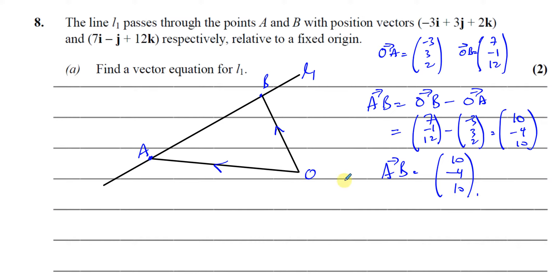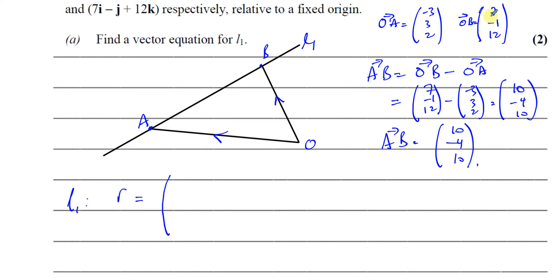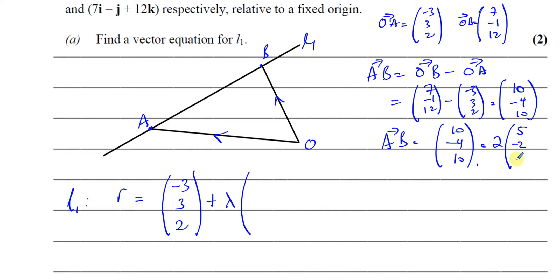Now I have the direction vector and a point. I can say line L1 has equation R equals the position vector of point A — minus 3, 3, 2 — plus lambda times the direction. I can see this is 2 times the vector 5, minus 2, 5, so I don't have to use exactly A to B — any parallel vector works. I'll simplify by factoring out 2, giving direction vector 5, minus 2, 5.